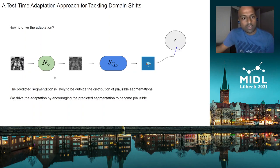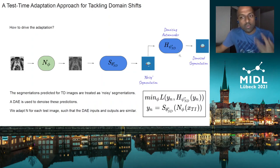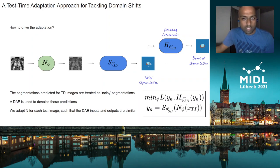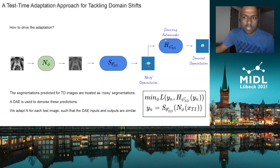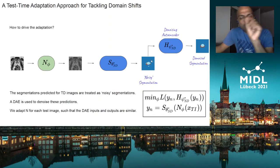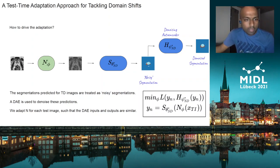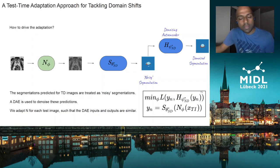The second question is how to drive this adaptation. The initial prediction for a target domain image will be outside the ball of good segmentations, so we drive adaptation by trying to push it inside. To quantify this ball of good segmentations, we use a denoising autoencoder (DAE). The DAE treats corrupted segmentations as noisy and maps them to plausible segmentations. It is independently trained on the source domain by heuristically generating noisy segmentations via copy-pasting patches of different sizes to random locations. During test-time adaptation, we change the parameters of the normalization module for each test image such that the input of the DAE becomes like the output of the DAE.